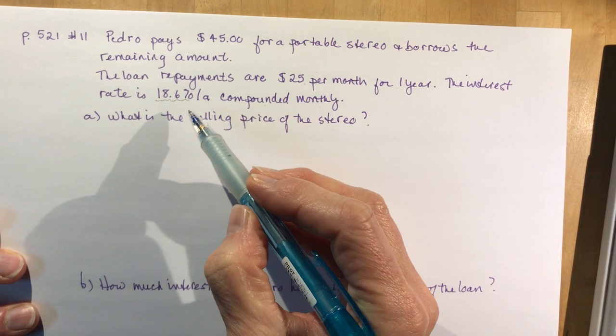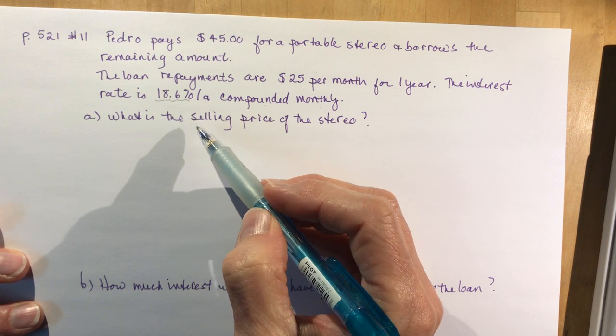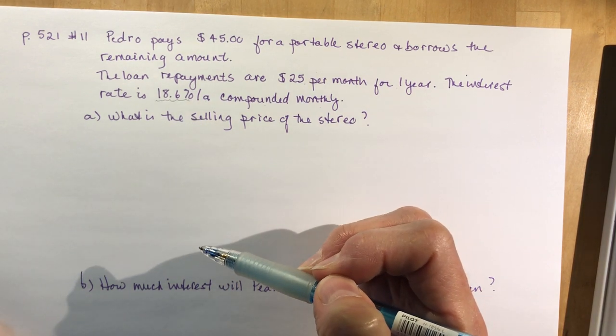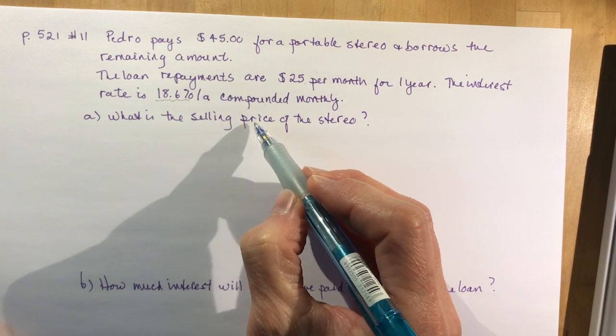This again is probably a reasonable interest rate today when you're borrowing money. The rates are really high. When your money's in the bank, the rates are really low. That's how the banks make money. What is the selling price?